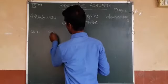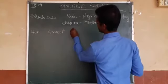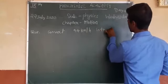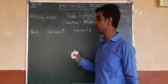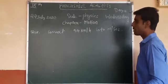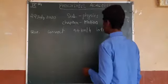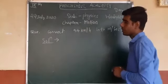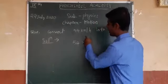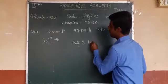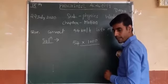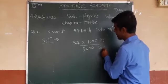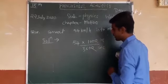Convert 54 kilometer per hour into meter per second. How many meter per second? So you must remember: 54 kilometers — one kilometer is 1000 meters, and one hour is 3600 seconds. So we write 54 multiplied by 1000 meters divided by 3600 seconds.